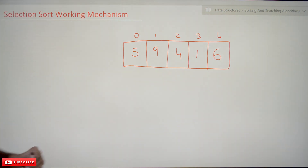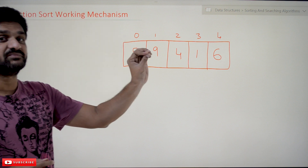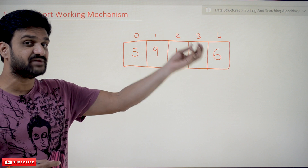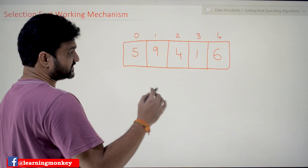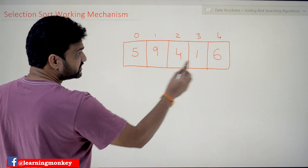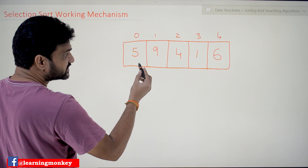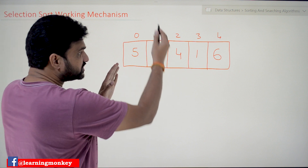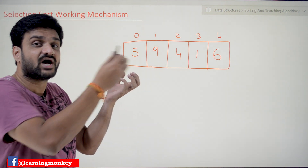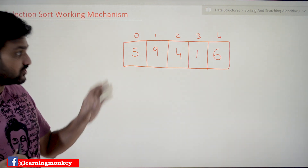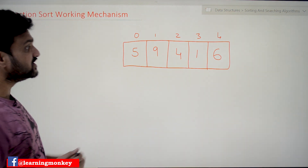The name itself suggests what selection sort does — selection means we are going to select the minimum element and keep that minimum element in its position. Consider this array of integer elements. Selection sort is going to divide the entire array into two halves: one half is going to have the sorted elements and the other half is going to have the unsorted elements. We will understand how that happens by analyzing this example.